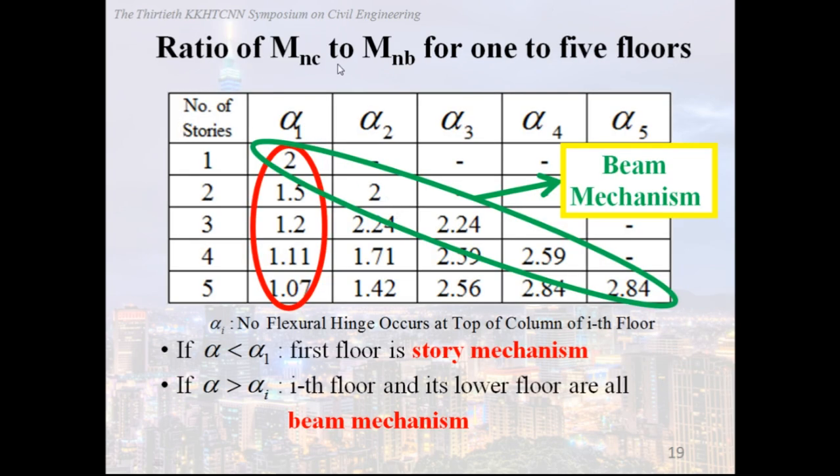Ratio of MNC to MNB for 1 to 5 floors. We induce the results into this table. From this table, we found that if alpha smaller than alpha 1, the red circle, it shows that the first floor is story mechanism. And another case, if alpha larger than alpha i, that is the green circle, it shows that the i's floor and its lower floor are all beam mechanism. And among them, the alpha sub i is no flexural hinge occurs at the top of the column of i's floor.